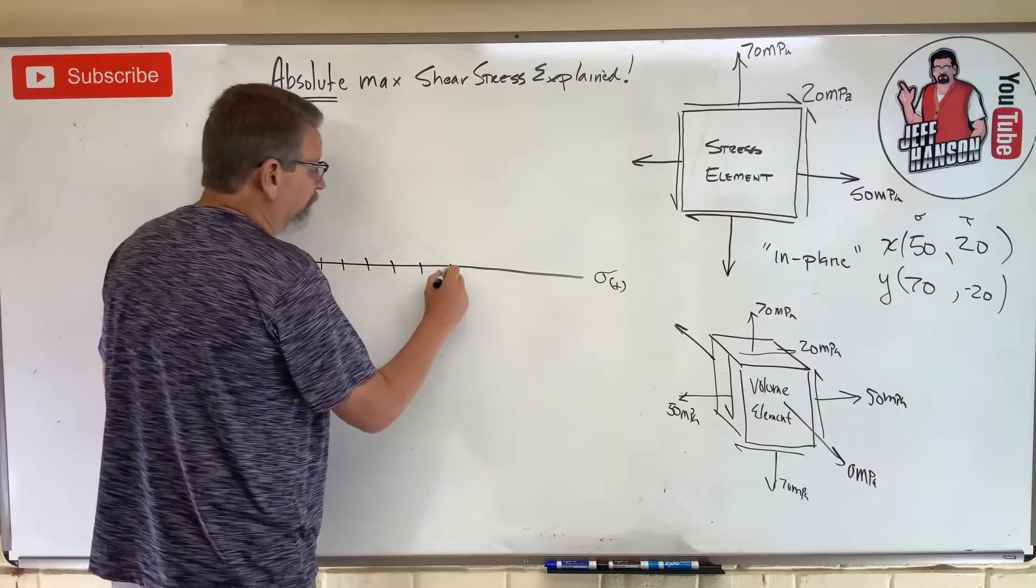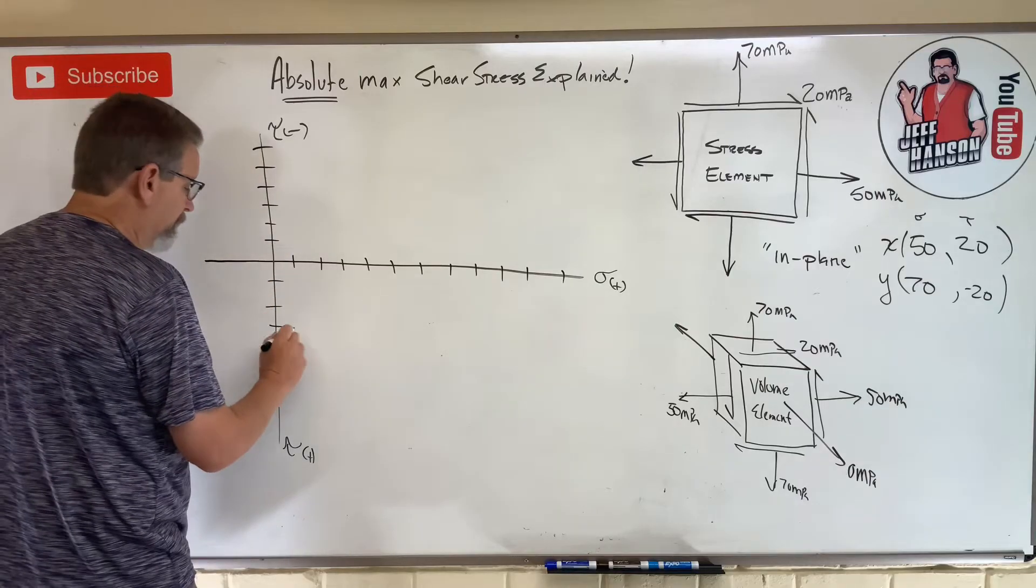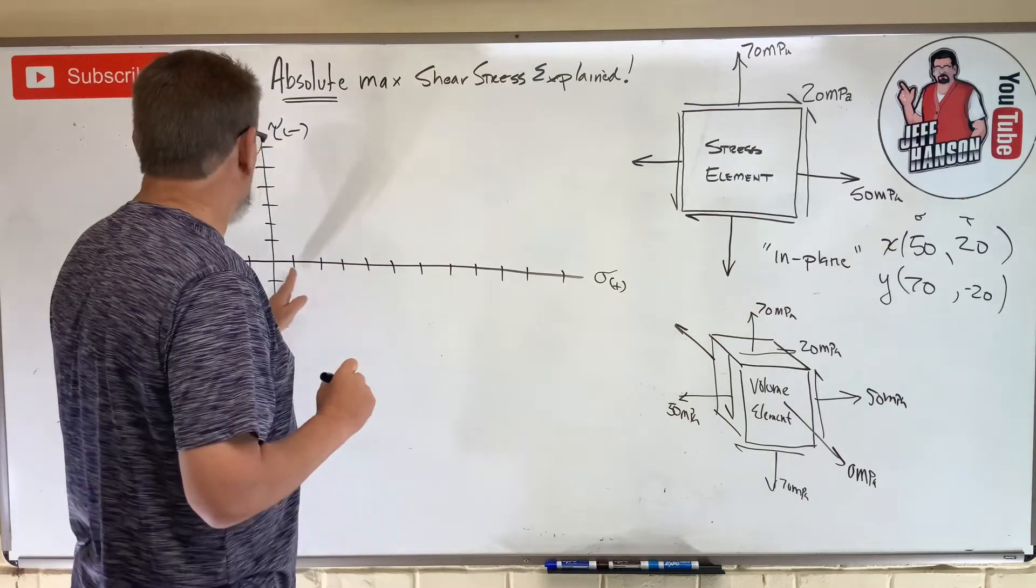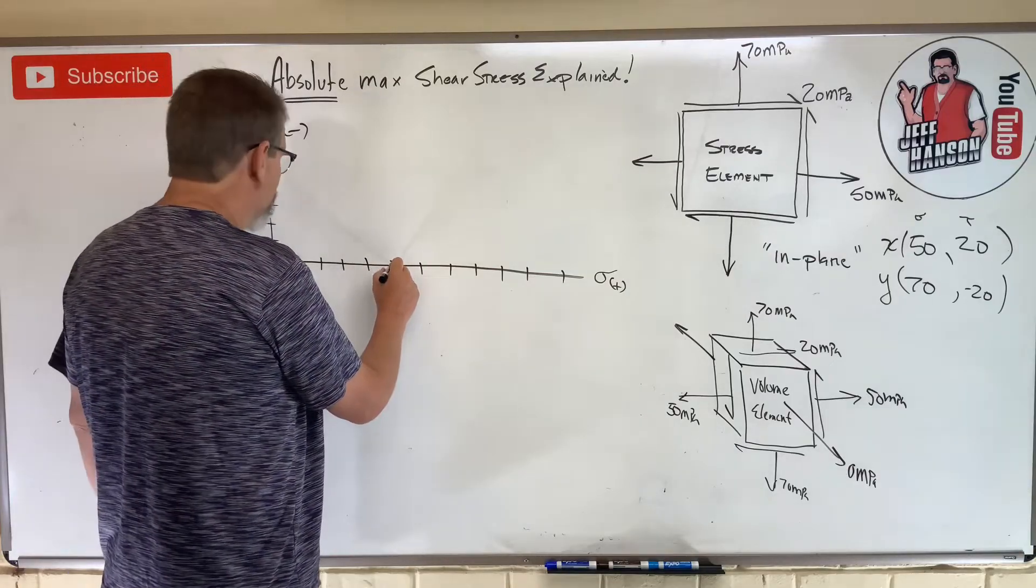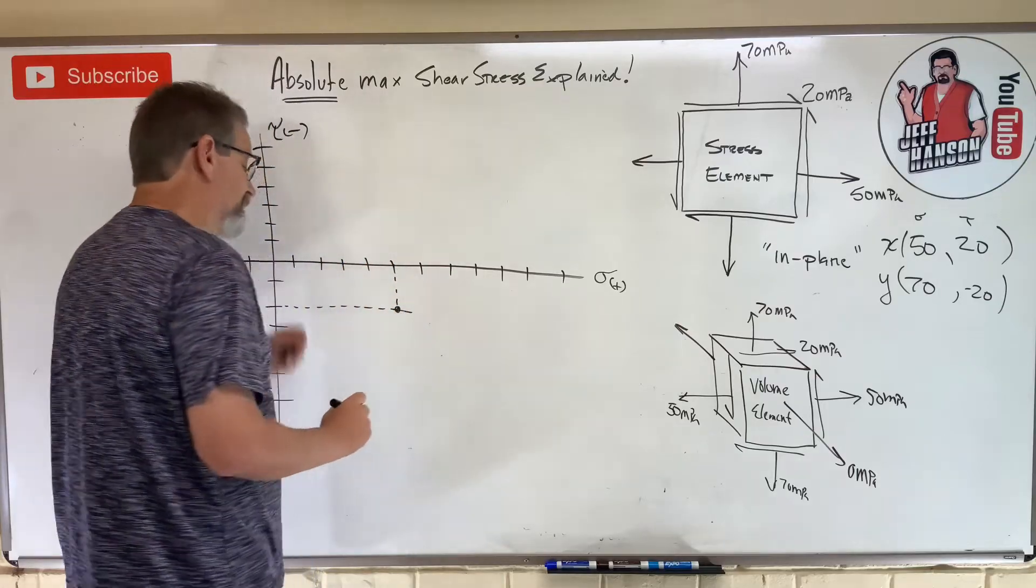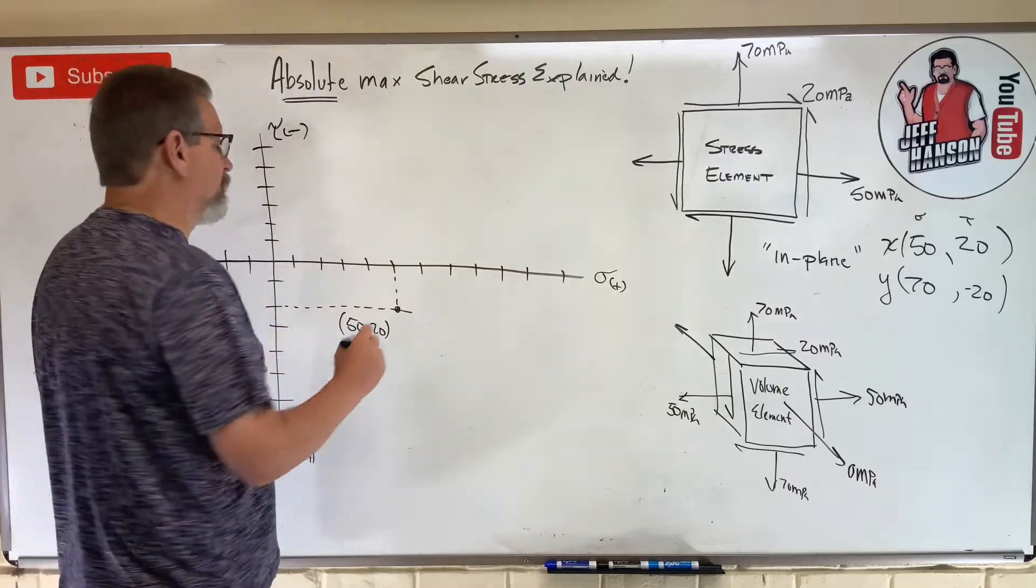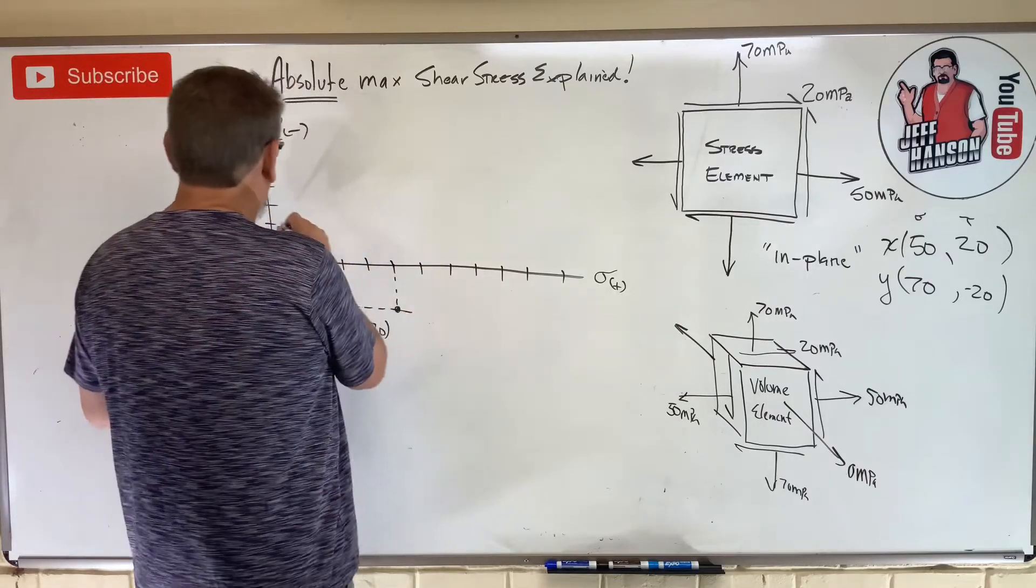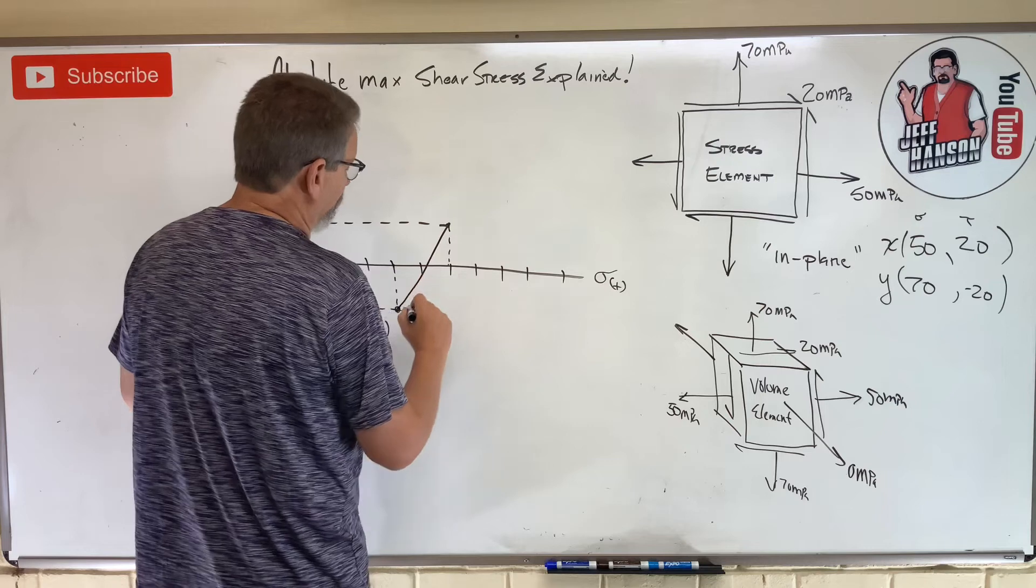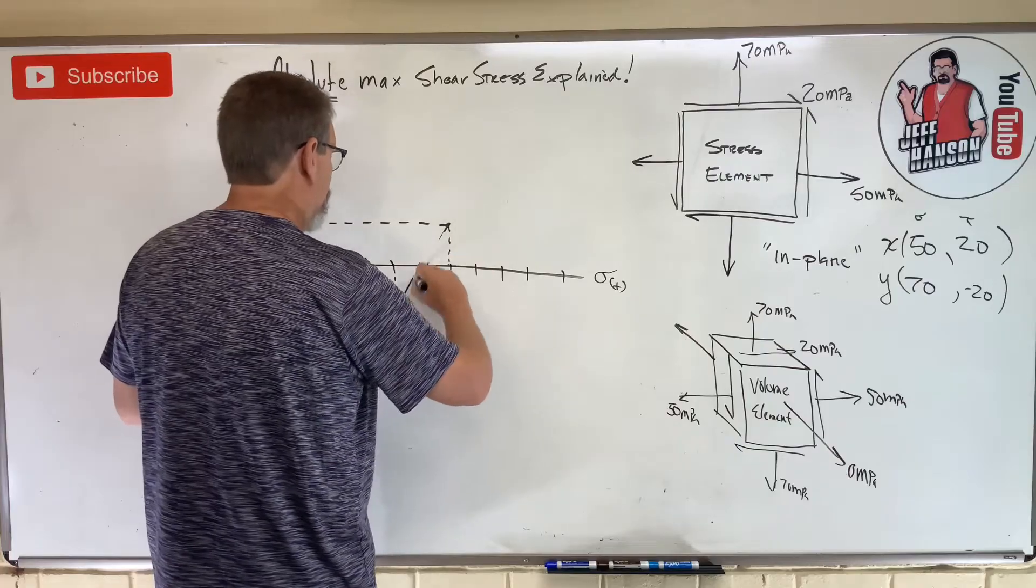So tau on the X face is going up, right? So if it rotates me counterclockwise, that's positive, isn't it? So I'm going to put a 20 there. And on the Y face, it rotates me clockwise. That's negative. These two are always opposite each other. So there's my coordinate points. For Mohr circle, let's plot it. Here's my tau axis. Here's my sigma axis. So right there is 50, 20.